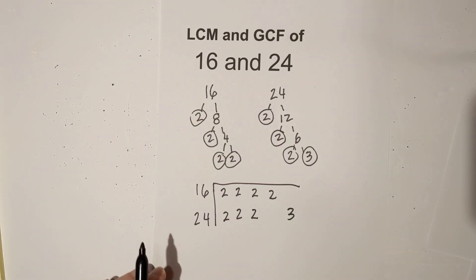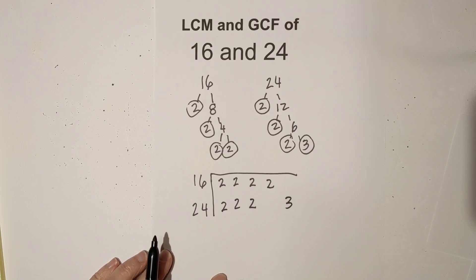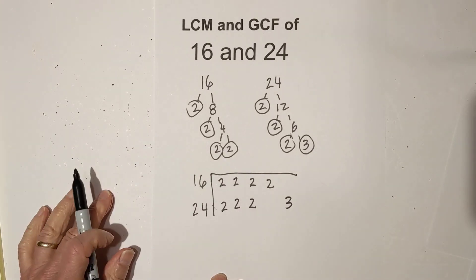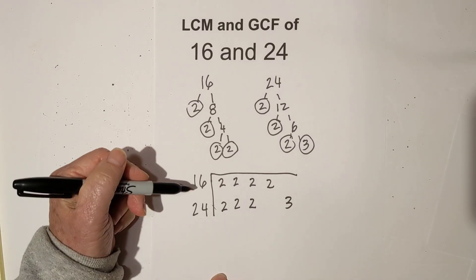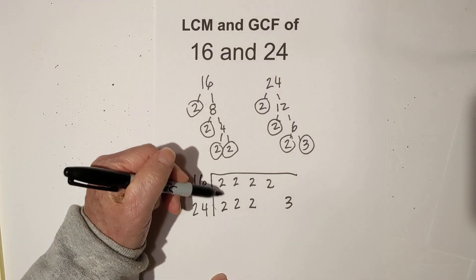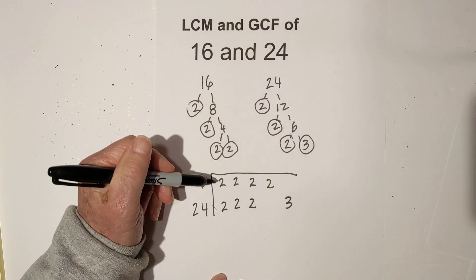Now for the lowest common multiple, what you do is you basically multiply all these numbers together but you have one rule you need to follow. So if you have more than one of the numbers, then you only use it once.